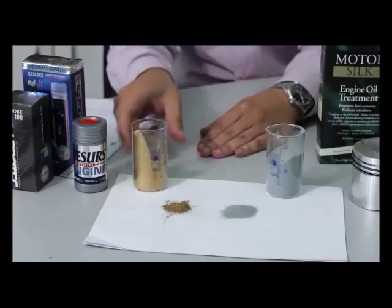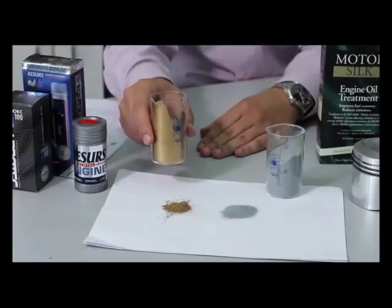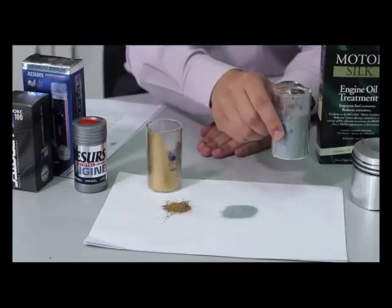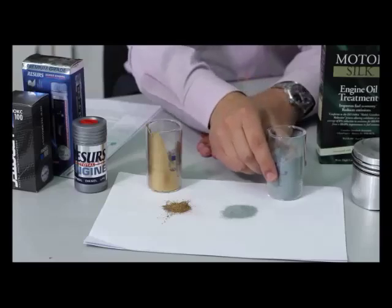Many oil additives contain ultra-dispersed powder. In general, it contains metal powders and such products refer to metal restorers or remetallizers. Also, there are other types of oil additives which contain ceramic or mineral powder. They are called geomodifiers.